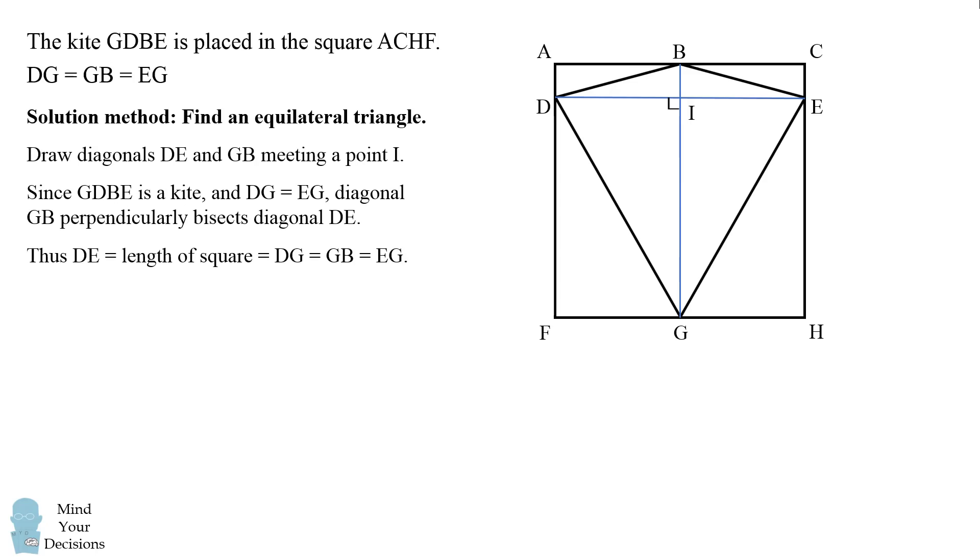Which equals GB, which equals EG. Therefore, DGE is an equilateral triangle, so each of its angles is equal to 60 degrees. In particular, angle DGE equals 60 degrees.